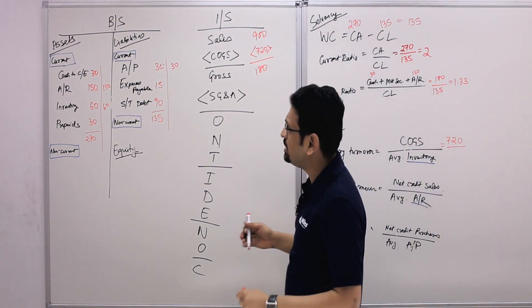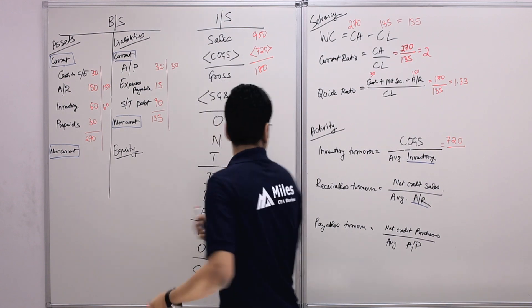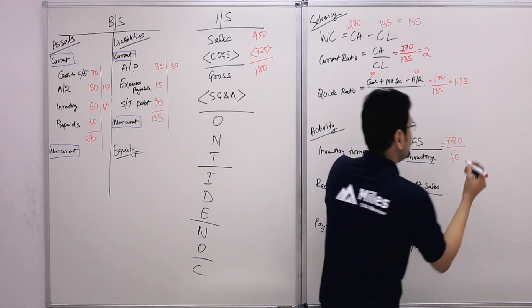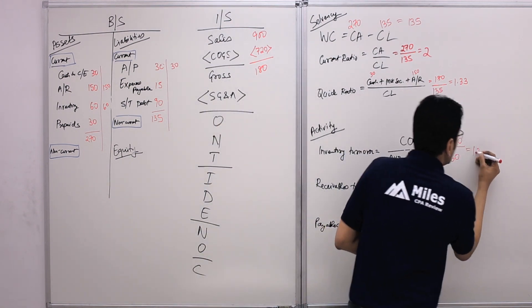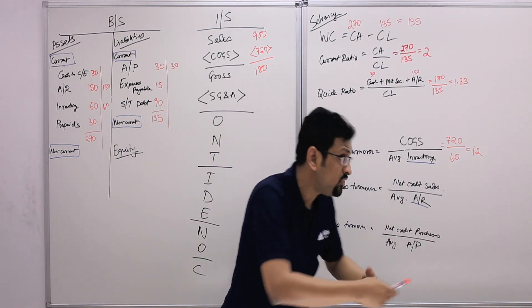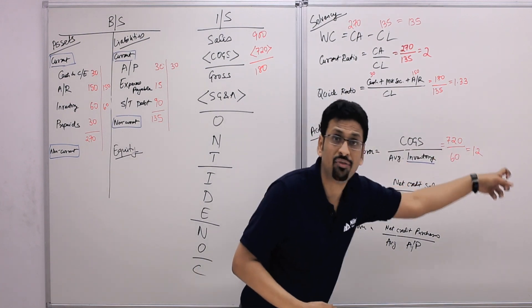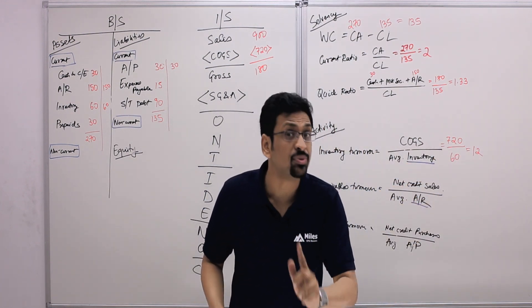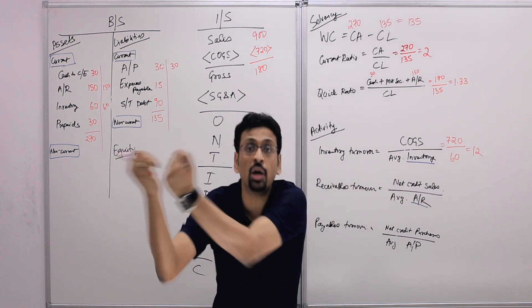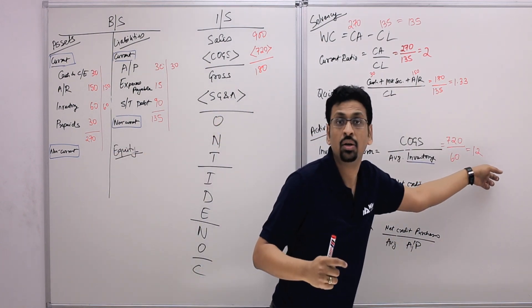720 divided by 60 gives us 12. So the inventory turnover ratio is 12 times — during the year, the business bought inventory and sold it 12 times.